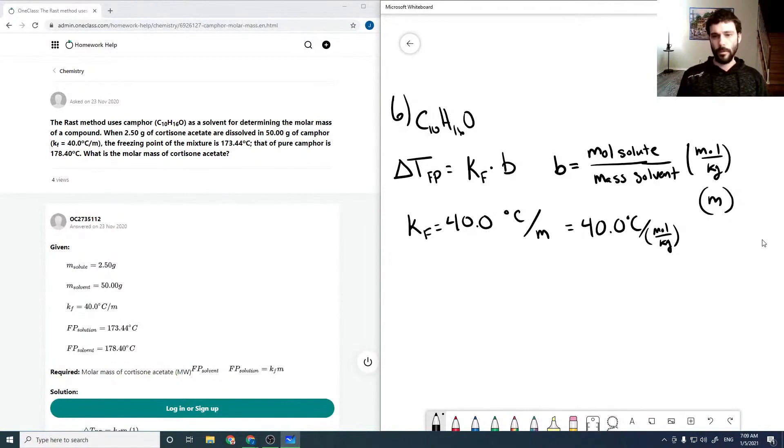So then our freezing point depression in this question is just 178.40 degrees Celsius minus 173.44. So that's how much our freezing point dropped by, which comes out to be 4.96 degrees Celsius.